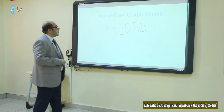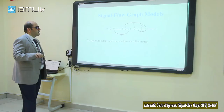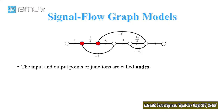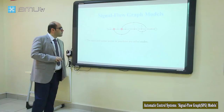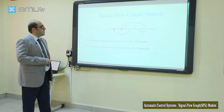For example, here is a signal flow graph with input, output, and some feedbacks. Let's talk about some terminologies. The first one is node. The input and output points or junctions are called nodes — this one, this one, this one. All the circles you see here are our nodes.